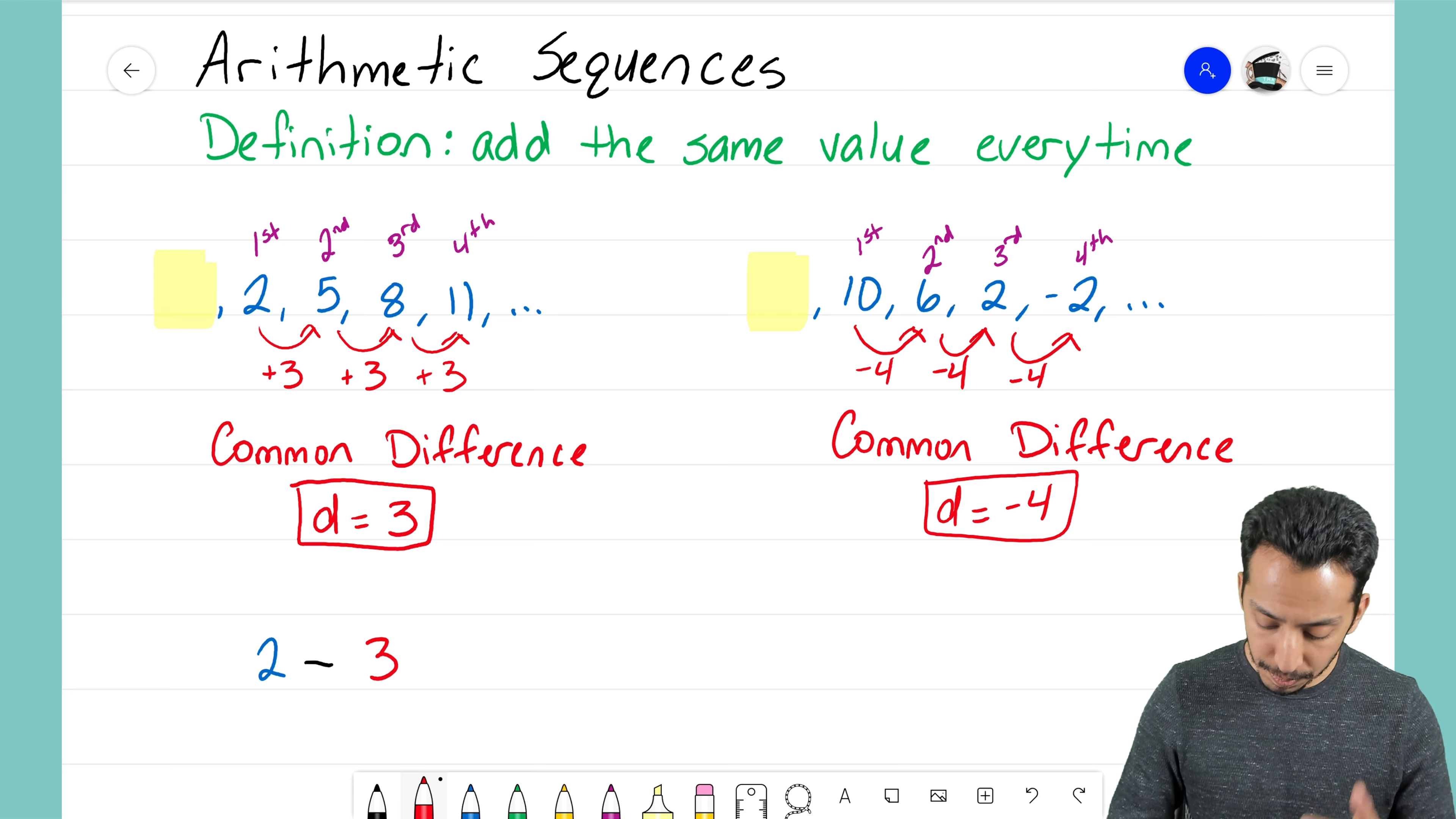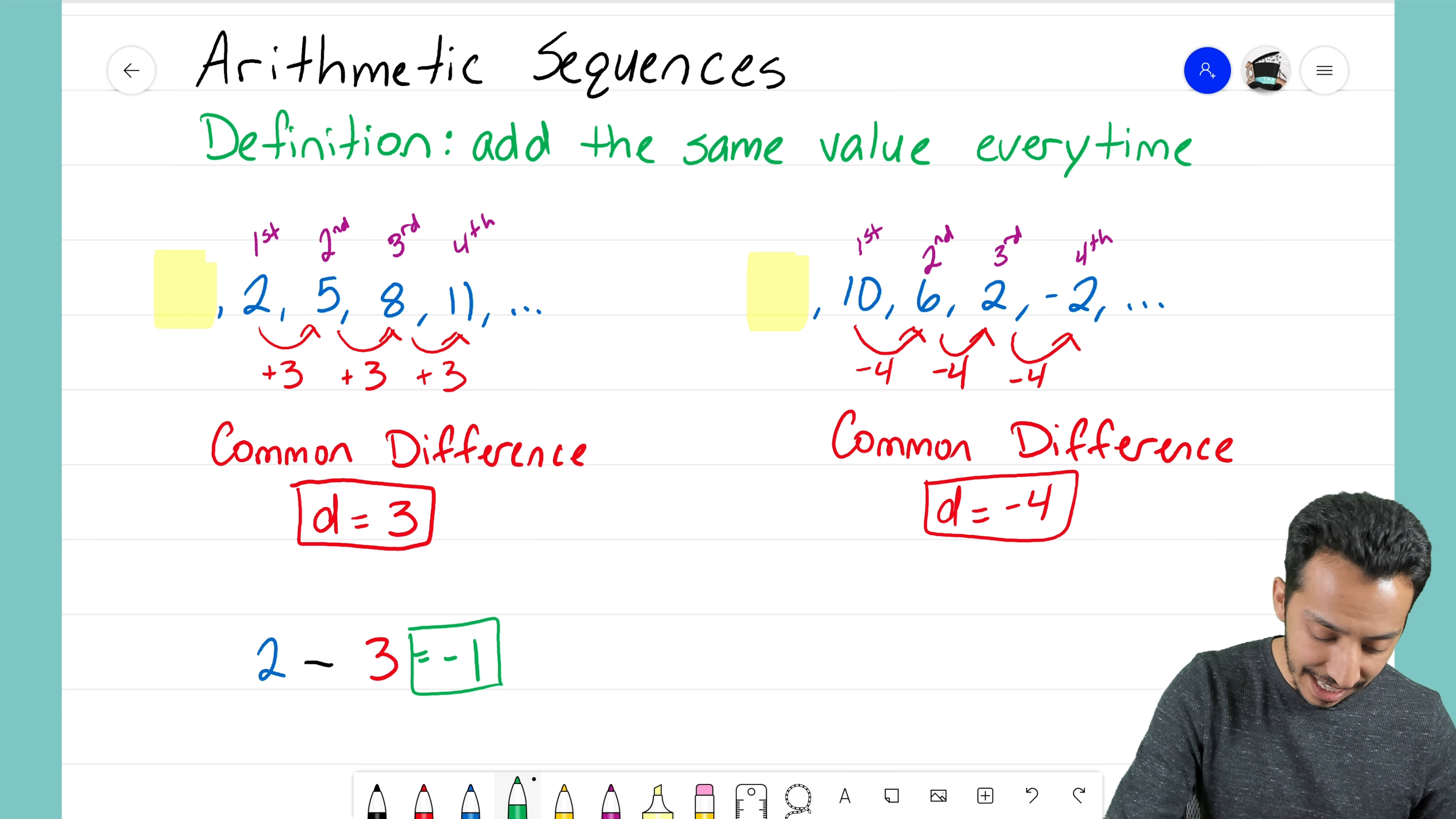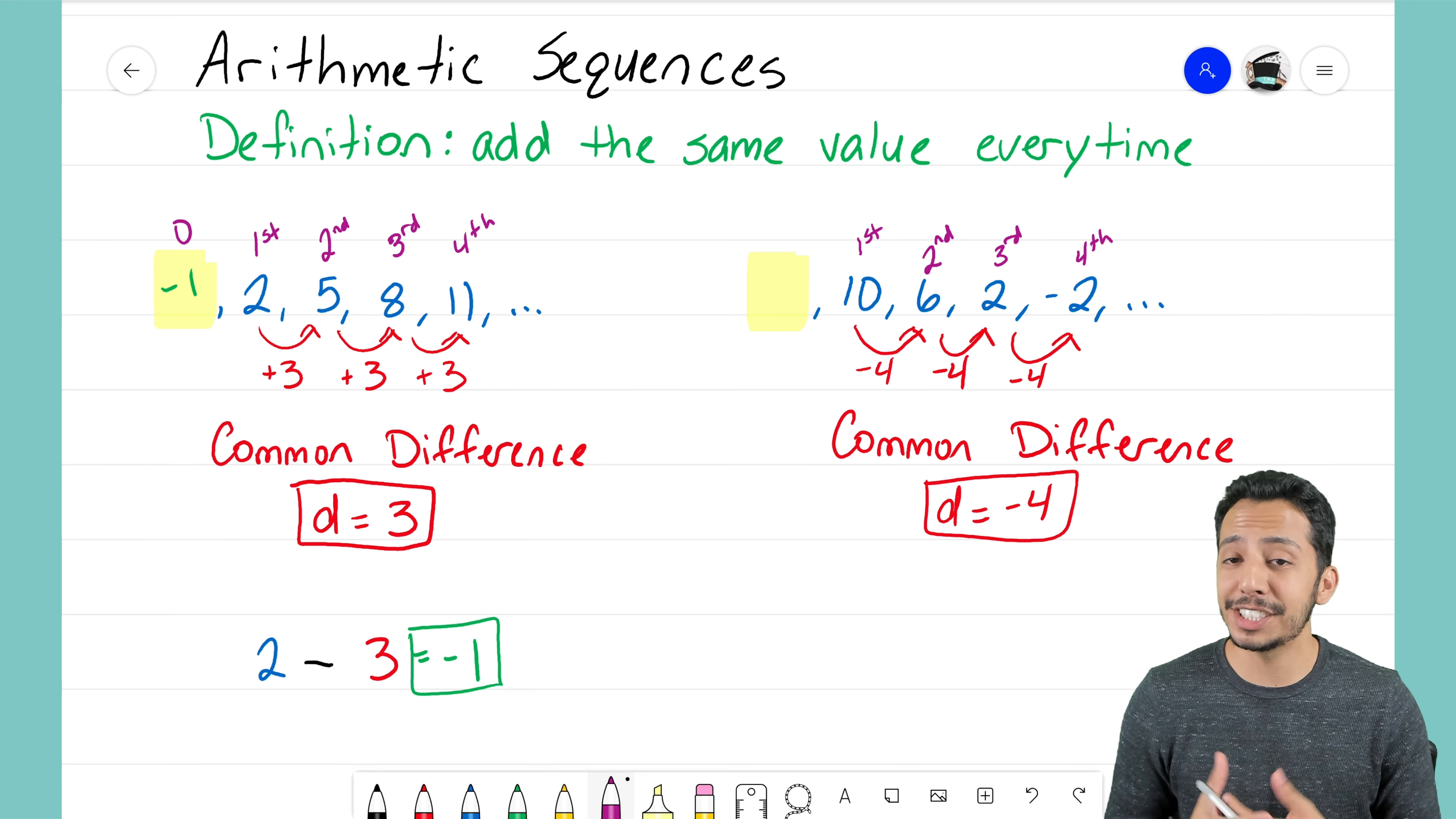If I do that, two minus three, that ends up equaling negative one. That negative one here, that is the zero term. That is that hidden term there, the term right before the first term.